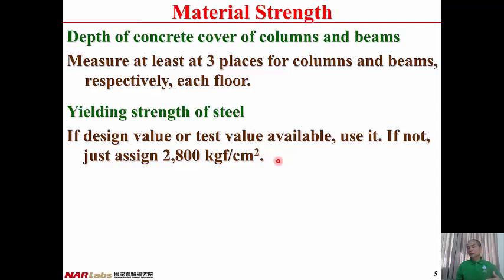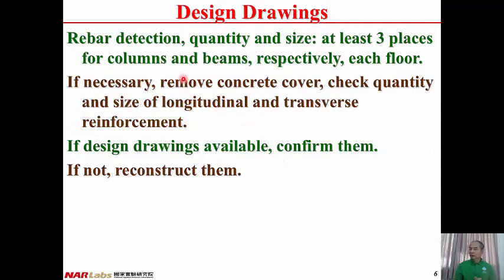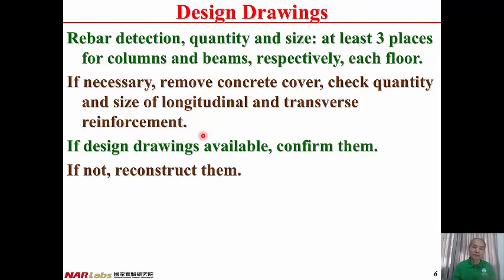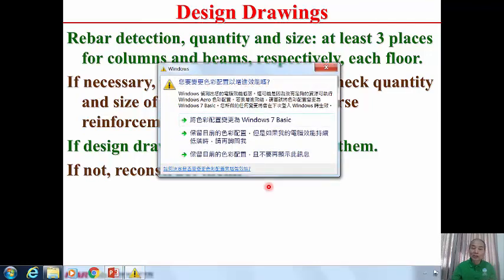From sampling of existing buildings, we know it is very common for the yielding strength of steel in existing buildings to be larger than 2600 kgf/cm². Therefore, it is conservative enough to assign 2600 kgf/cm² for the yielding strength of steel. Rebar detection is necessary to know the quantity and diameter of the rebars — at least three places for columns and three places for beams per floor. If necessary, remove the concrete cover and check longitudinal and transverse reinforcement. If design drawings are available, confirm them; if not, reconstruct the design drawings.